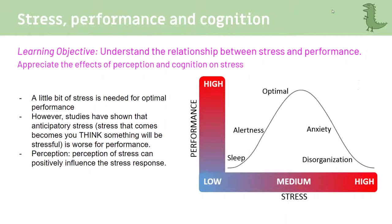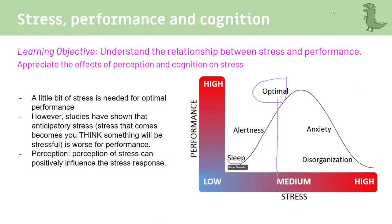You need a little bit of stress to perform optimally — that's the inverted-U curve. If you're not stressed at all, you won't want to do your exam. Low to medium stress helps you be more alert. But too much stress is when your mind starts racing. This is also part of the MOM content for this week. That's pretty much the first lecture done.